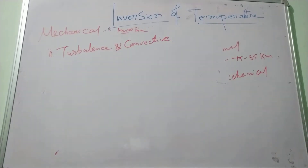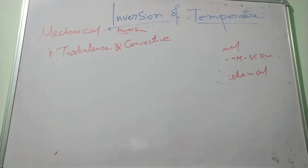Within the turbulence layer, vertical mixing carries heat downward and cools the upper part of the layer, which causes a turbulent loss of temperature.